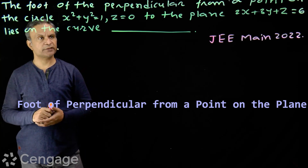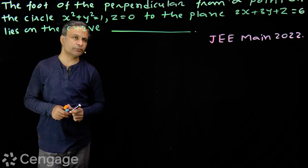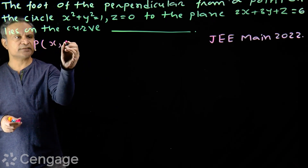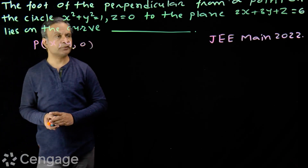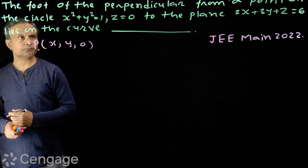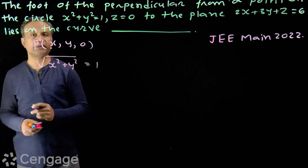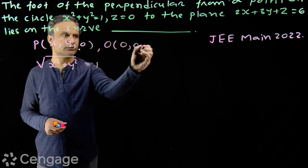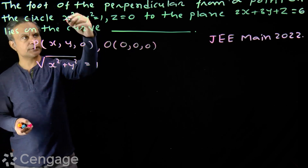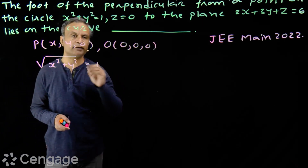These two equations together represent a circle. We have x² + y² = 1 and z = 0. z = 0 means points lie on the xy-plane. So we consider a variable point P having coordinates (x, y, 0) on the xy-plane. We have √(x² + y²) = 1, which is clearly the distance of point P from the origin (0, 0, 0). So these two equations together represent a circle on the xy-plane with centre at the origin and radius 1.